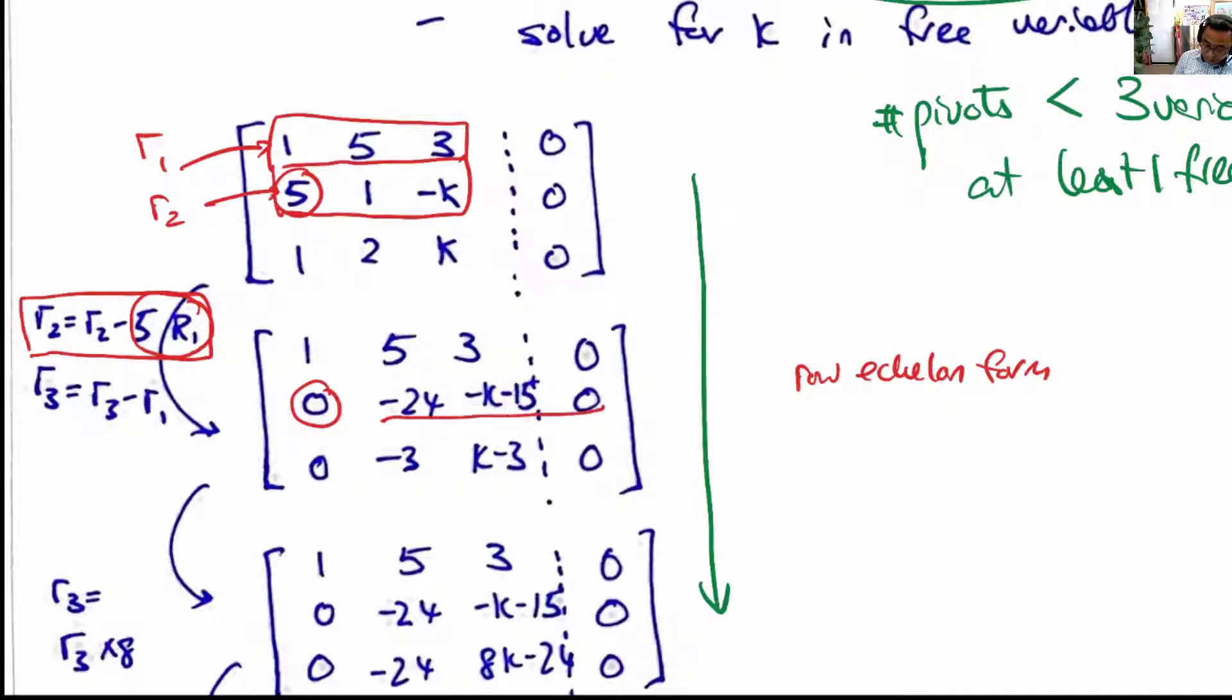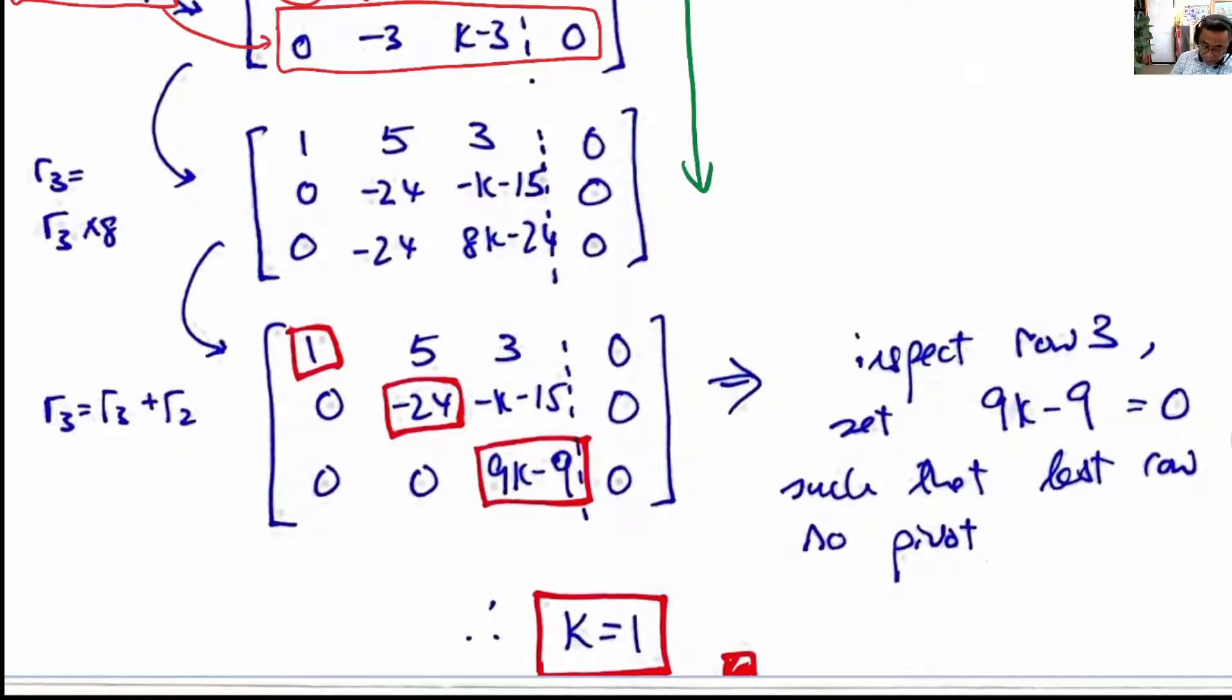This is the resultant second row, and we also progress to do the third row. This is the resultant third row by this operation. We continue along and we finally get this matrix.